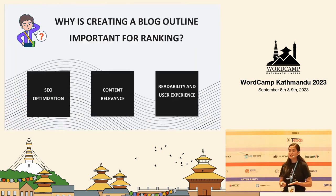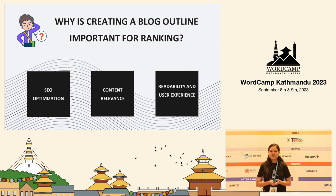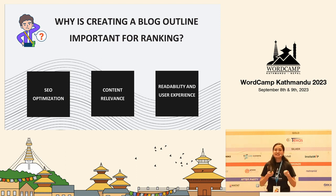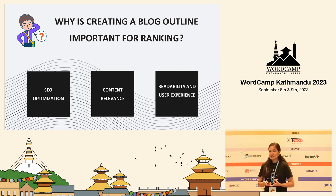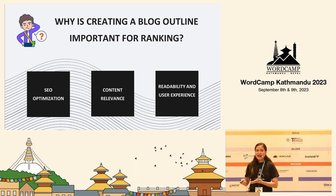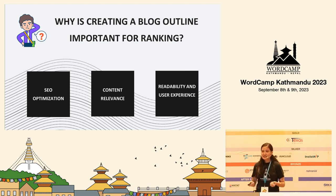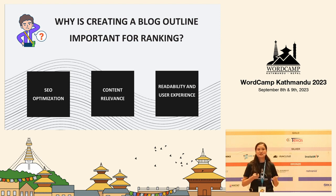You may be wondering why creating a blog outline is important for ranking. A blog outline is a structured plan for your blog post, and this structured plan is derived after a careful analysis of the keywords, their search intent, and your competitors. When you write your content based on that outline, it's obvious that your article will start ranking. When you analyze the search intent and competitors, you are able to know what readers are wanting in your article, making your content relevant — which is a plus point for ranking.